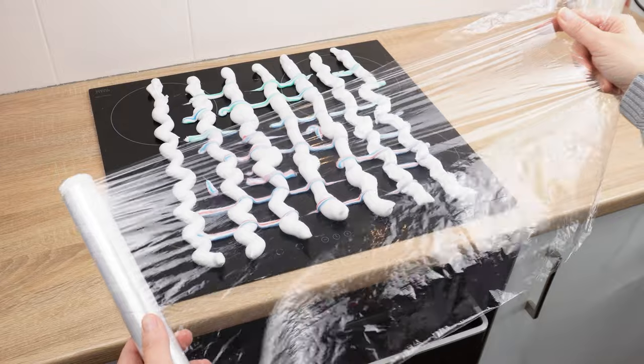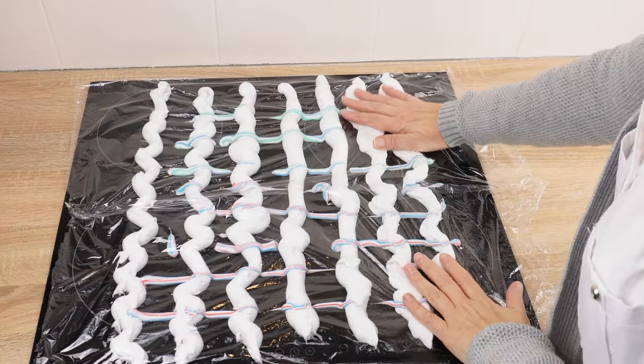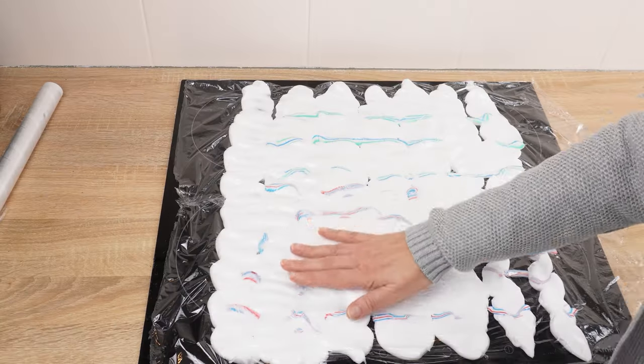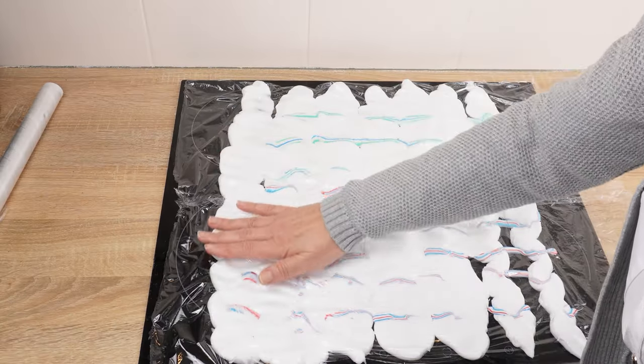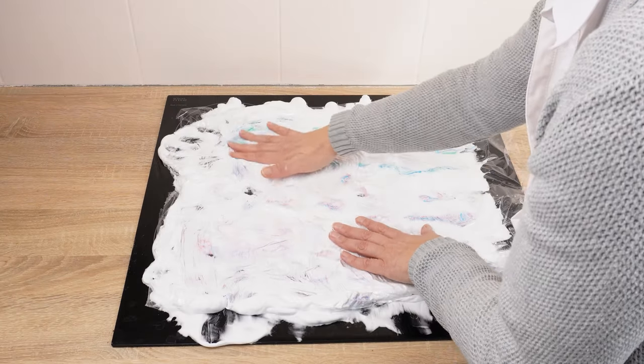Cover the induction hob with cling film. Do it carefully. Once the film covers the induction, press the foam with toothpaste firmly. These two products will mix and cover the entire surface. Leave the induction hob like this for a few minutes. The foam with toothpaste will work during this time.